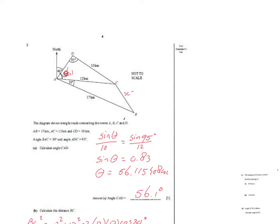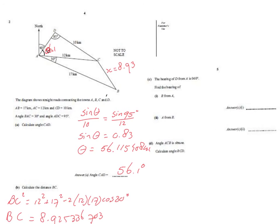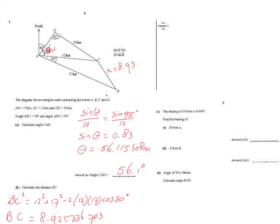The question continues: the bearing of D from A is 040°. Find the bearing of B from A. We're looking at the angle from A towards B. The bearing is going to be 40 plus 30 plus 56.1 — show your working, because even if the answer is wrong you can still get marks. That gives 126.1, which as a three-digit bearing is 126°.